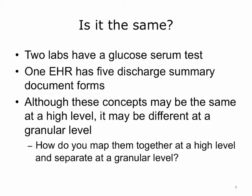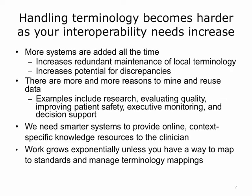For example, two labs will both have glucose serum tests, but they will have differences because they use different equipment and have different reference ranges and other different characteristics. One EHR could have five different discharge summary document forms because maybe they were just created at different times or represent the discharge summary for different departments. At a high level, they are still all discharge summaries. How do you map the concepts together at a high level and still keep them separate at a granular level? This is the kind of thing that a terminology management system can provide for you.